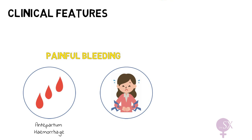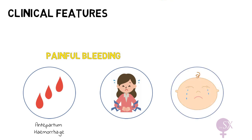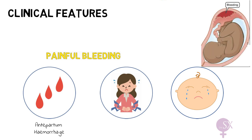The abdominal pain may also be secondary to contractions, as labour usually starts. In severe cases the uterus may be woody hard. Patients can also present with fetal distress, as the placenta is the source of oxygen and nutrients to the fetus. If the placenta has completely separated from the uterine wall, oxygen and nutrients are no longer delivered to the fetus, resulting in fetal hypoxia and fetal distress.